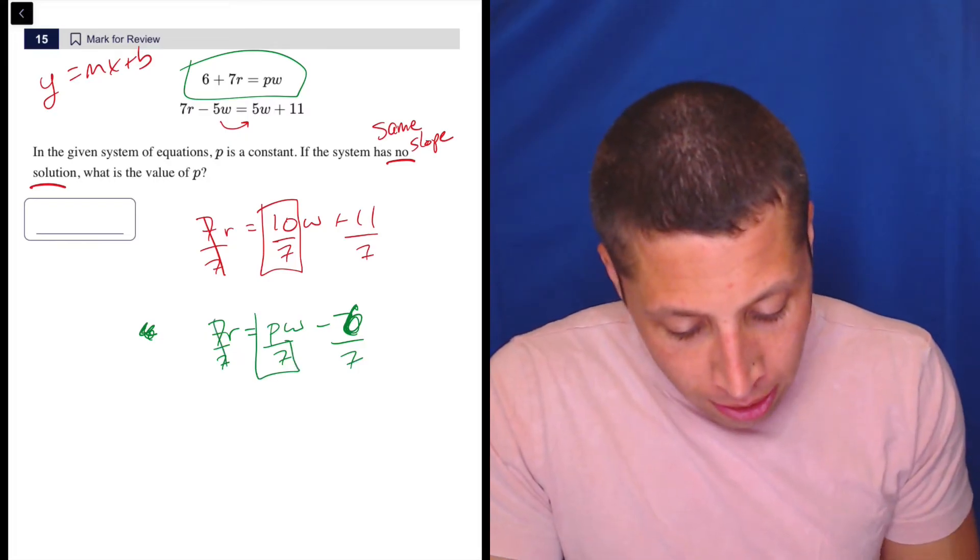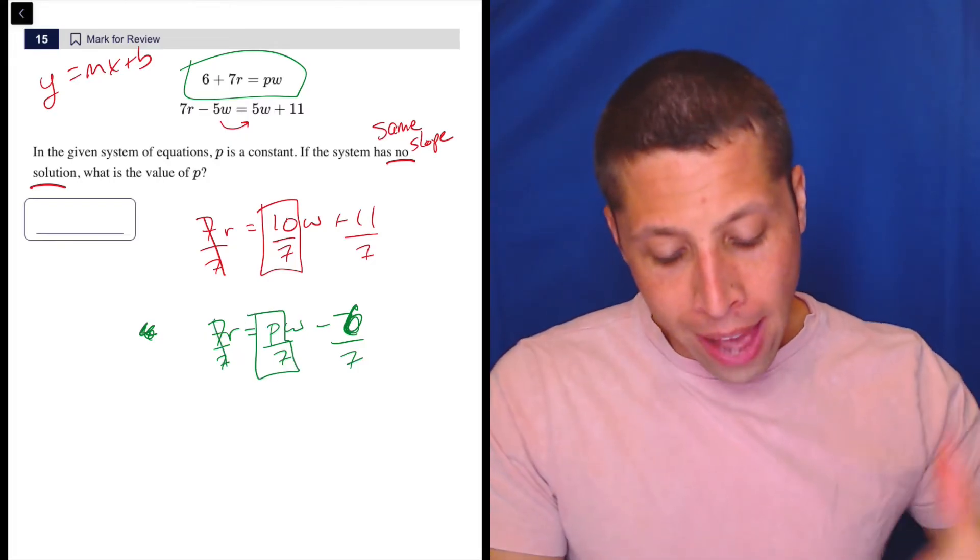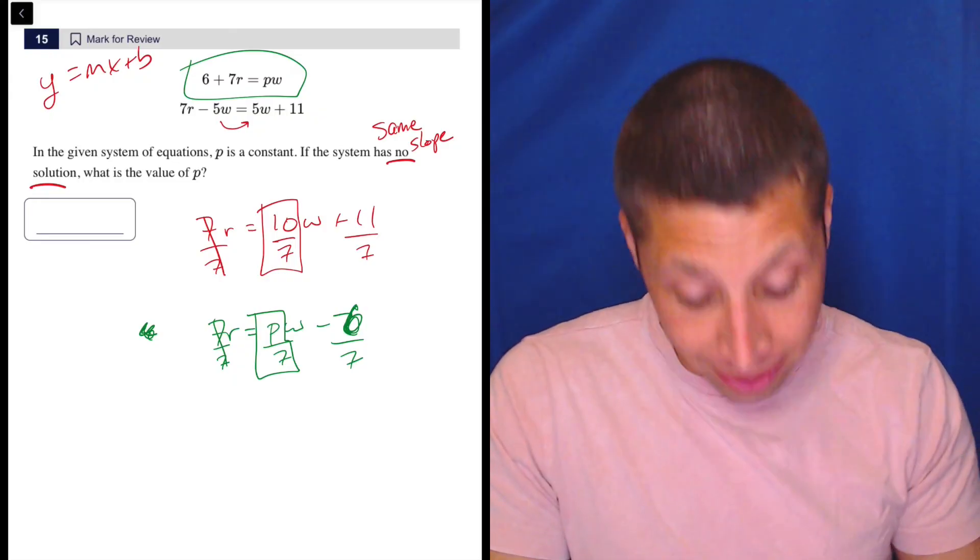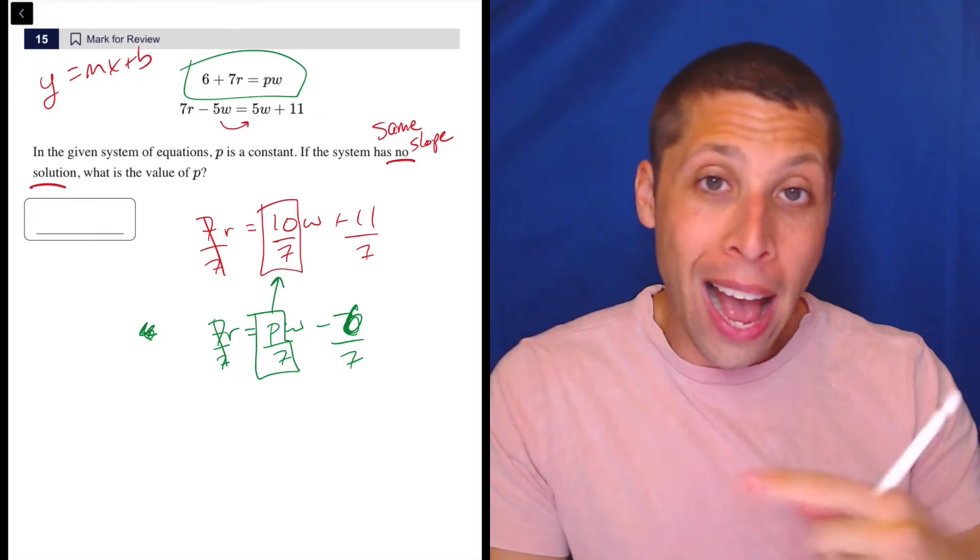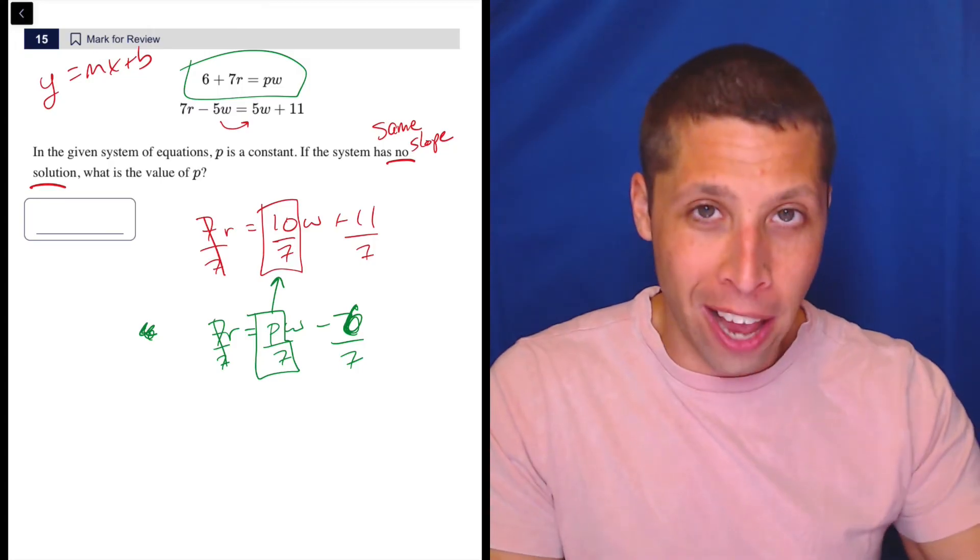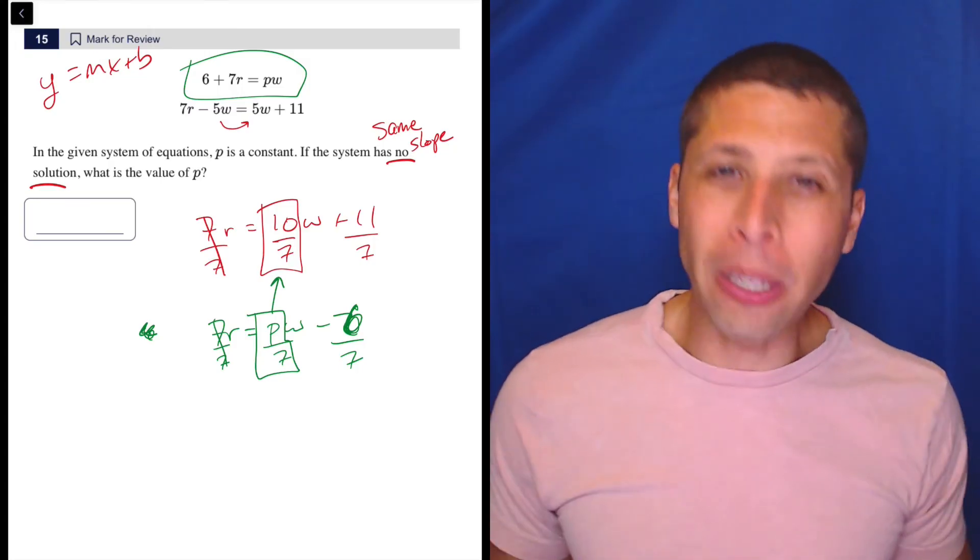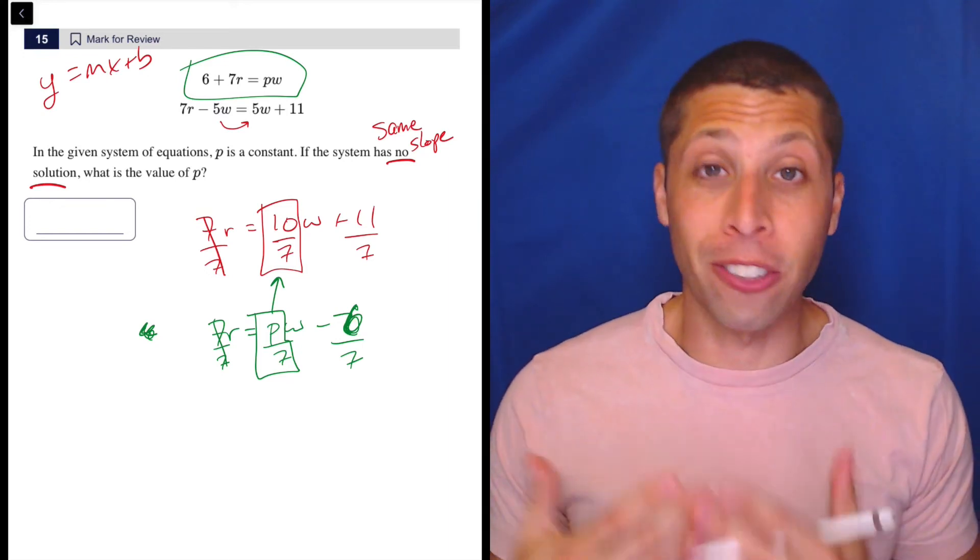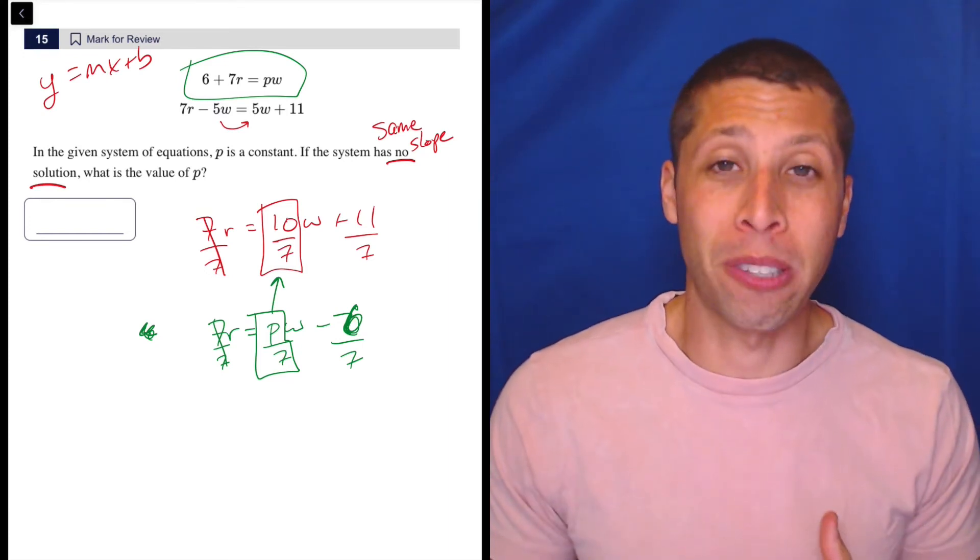And I see what I wanted. P over seven - we need to solve for P. P over seven has to be the same slope as this 10 sevenths in the other line. You could probably do this without getting it back to Y equals MX plus B, but I think that's riskier. I think it's safer to think about slopes and Y equals MX plus B.